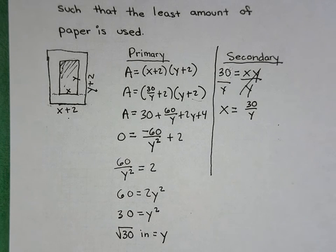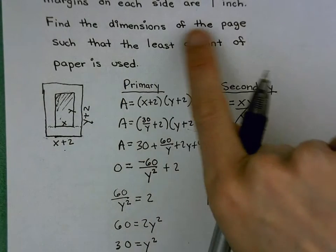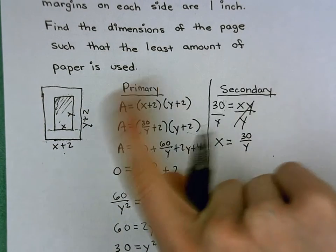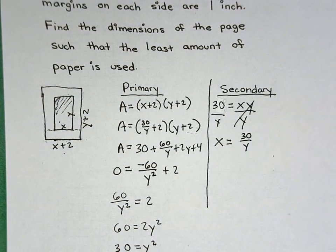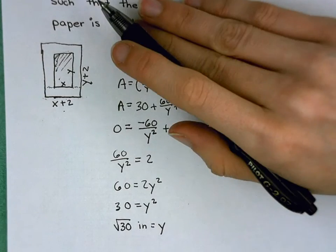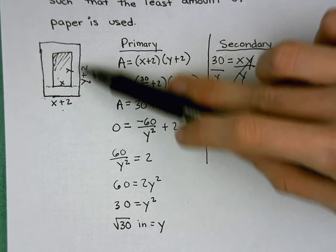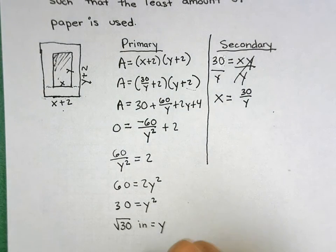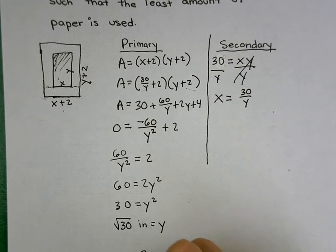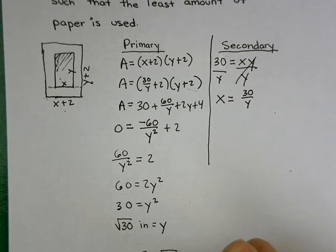Last step, make sure you've actually answered the question. In this case, they want us to find the dimensions of the page such that the least amount of paper is used. So I have found Y in this particular case. So my page side would be Y plus 2. So we have 2 plus my Y.